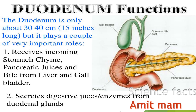In this diagram you can see the gallbladder, common bile duct, pancreas, and pancreatic duct — and this is the duodenum. The green part is the gallbladder with the common bile duct, and the yellow part is the pancreas with the pancreatic duct connecting to the duodenum. The duodenum is only about 30 to 40 centimeters, approximately 15 inches long, but it plays a couple of very important roles in the digestion of food.